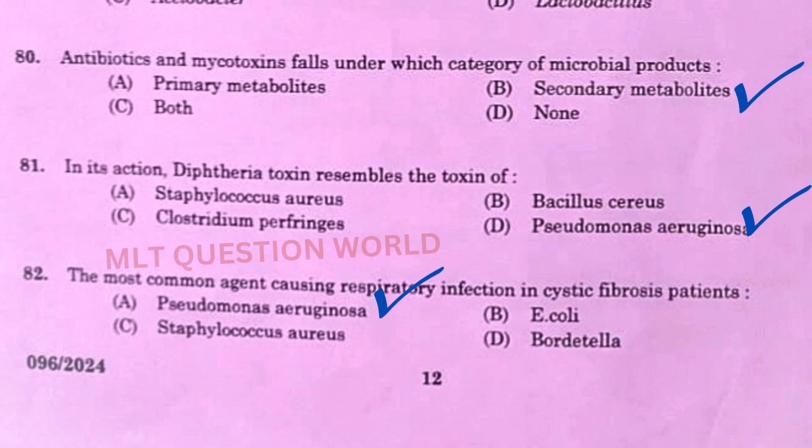Next one: Antibiotics and mycotoxins fall under which category of microbial products? The right answer is option B, secondary metabolites. Next one: In its action, diphtheria toxin resembles the toxin of Pseudomonas aeruginosa. Next question: The most common agent causing respiratory infection in cystic fibrosis patients — the right answer is option A, Pseudomonas aeruginosa.